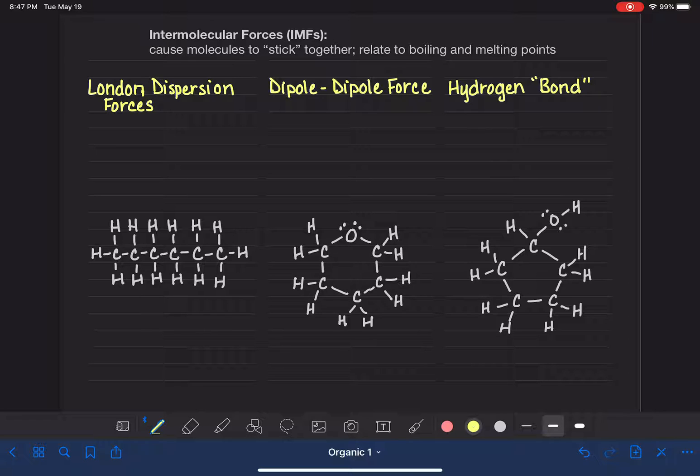So these are listed, the way that I put them here, they are listed in order of increasing strength. So the London dispersion force is the weakest of these three. And the hydrogen bond is the strongest of these three, with the dipole-dipole force being in the middle.